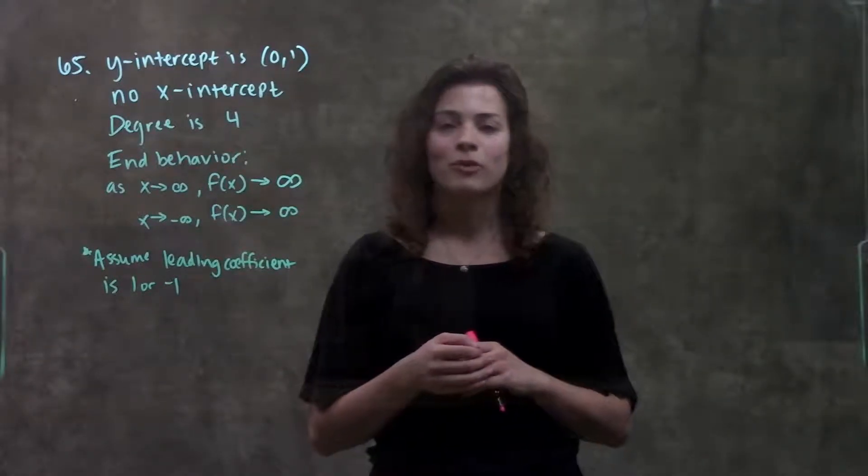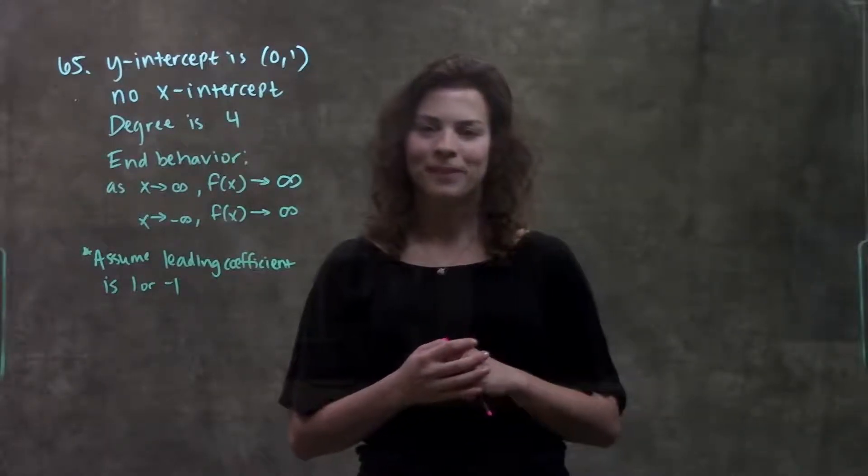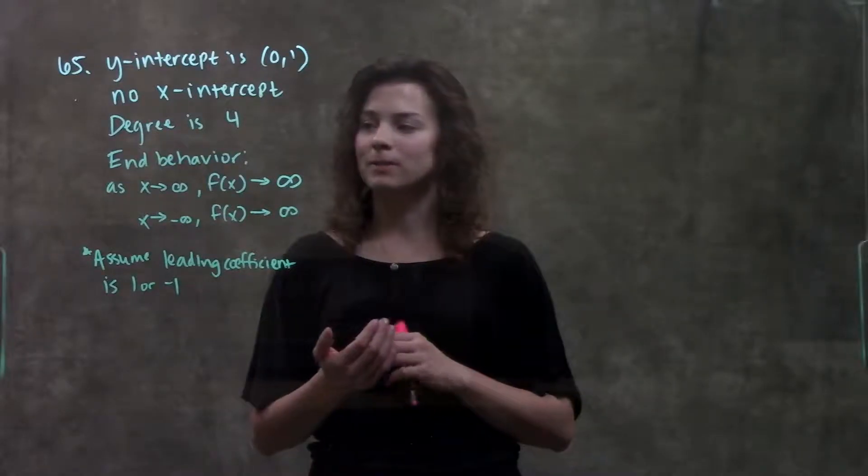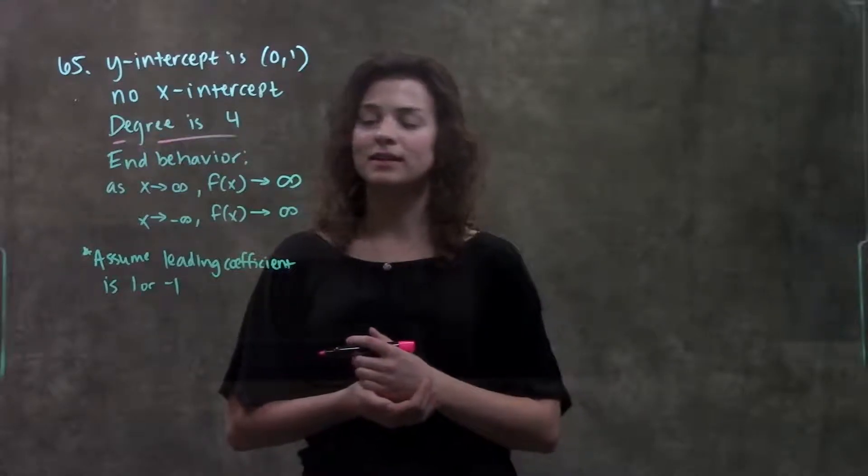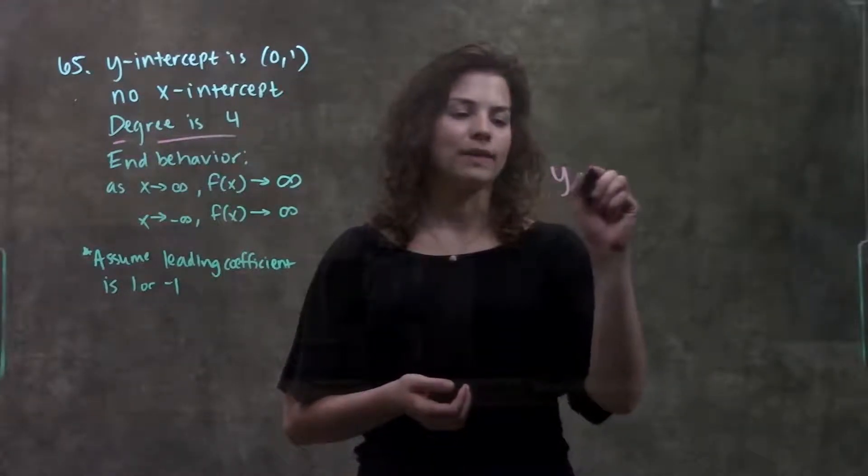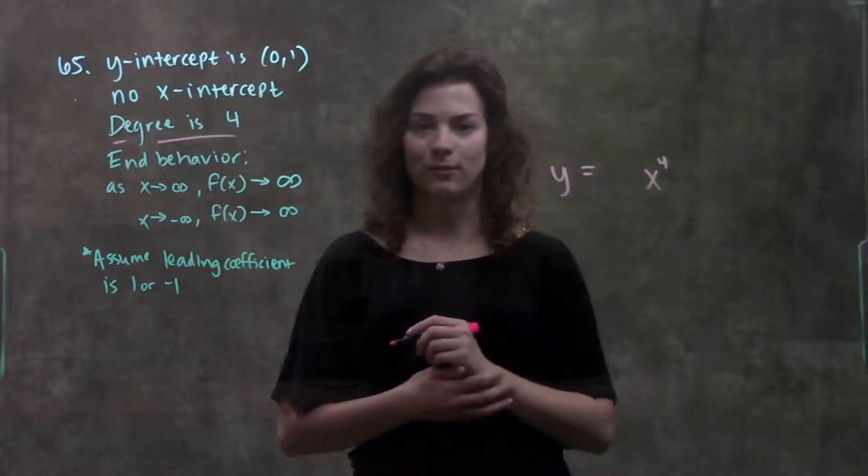Alright, so to go through this type of problem, we just need to go through each of these pieces piece by piece and see what comes up. So, the one that I'll start with for this problem is the degree. I think that's the biggest piece of information that they give us. They tell us that the degree is 4, so I'll write that as y equals x to the 4th. My leading term is raised to the 4th power.